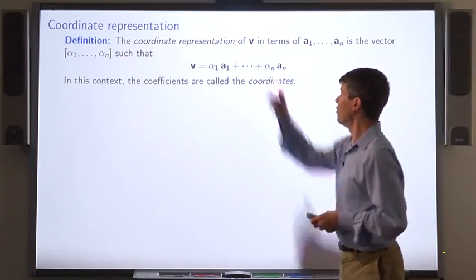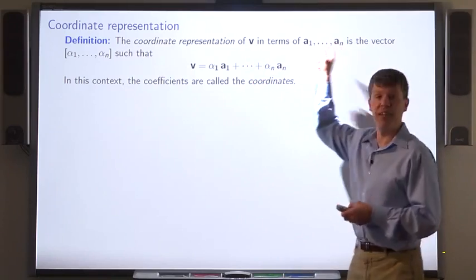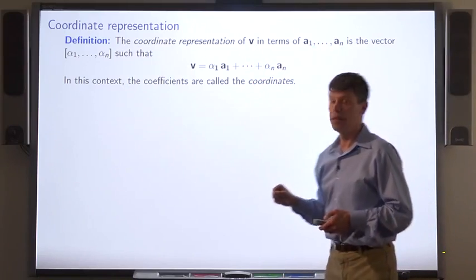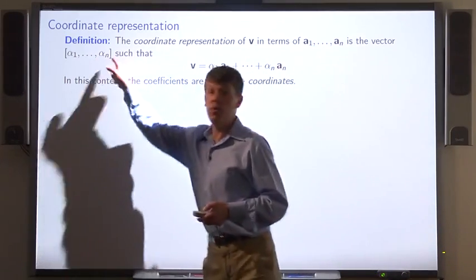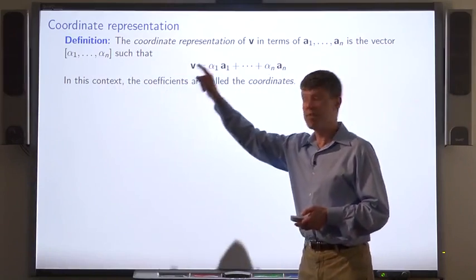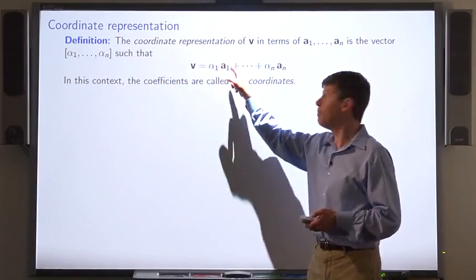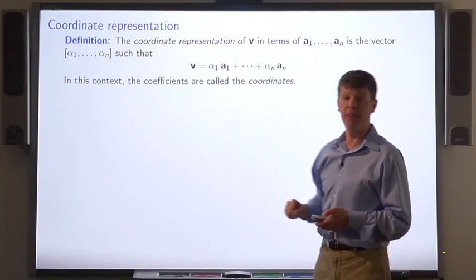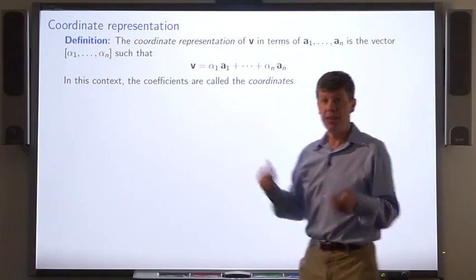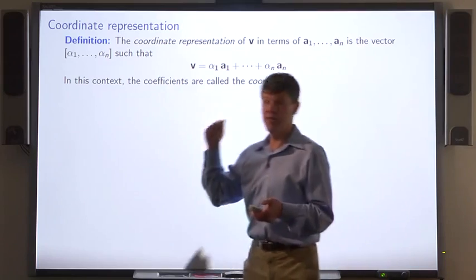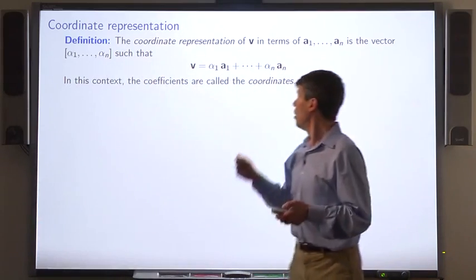The coordinate representation of a vector v in terms of other vectors a1 through an is the vector of coefficients, the vector of numbers alpha 1 through alpha n, such that v equals alpha 1 times a1 and so on, up to alpha n times an. In this context, we call the coefficients, the numbers in this vector, coordinates.